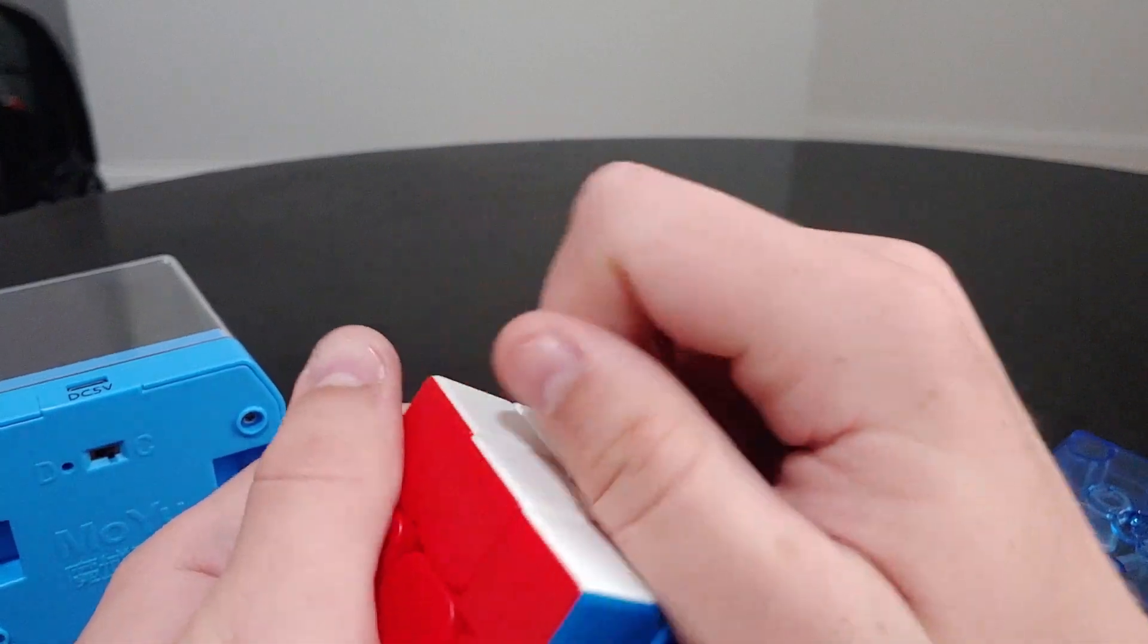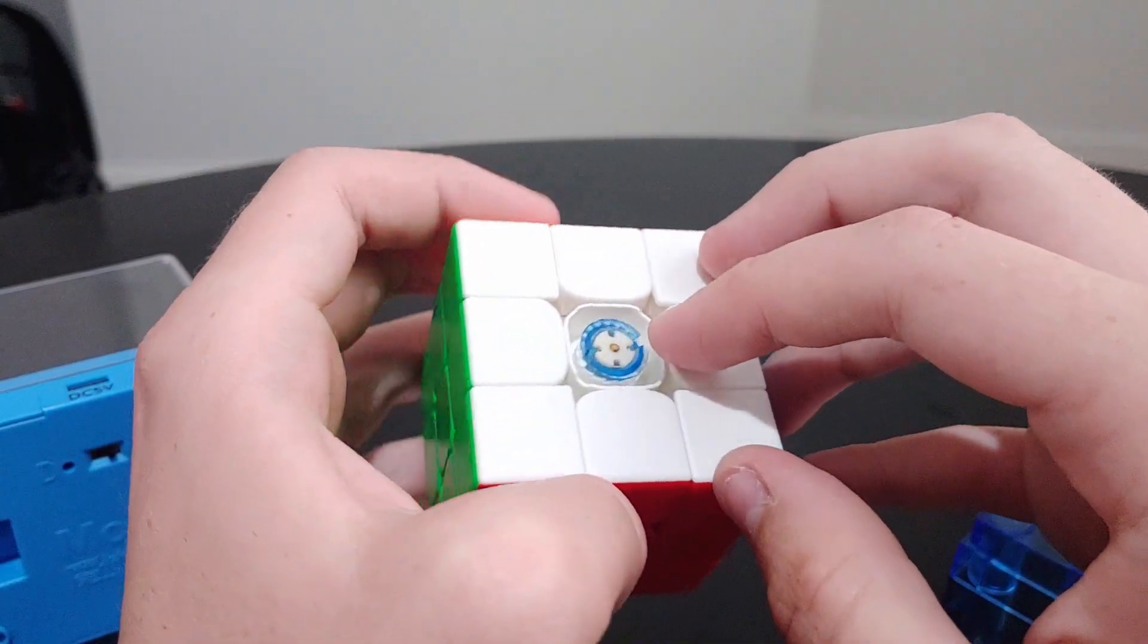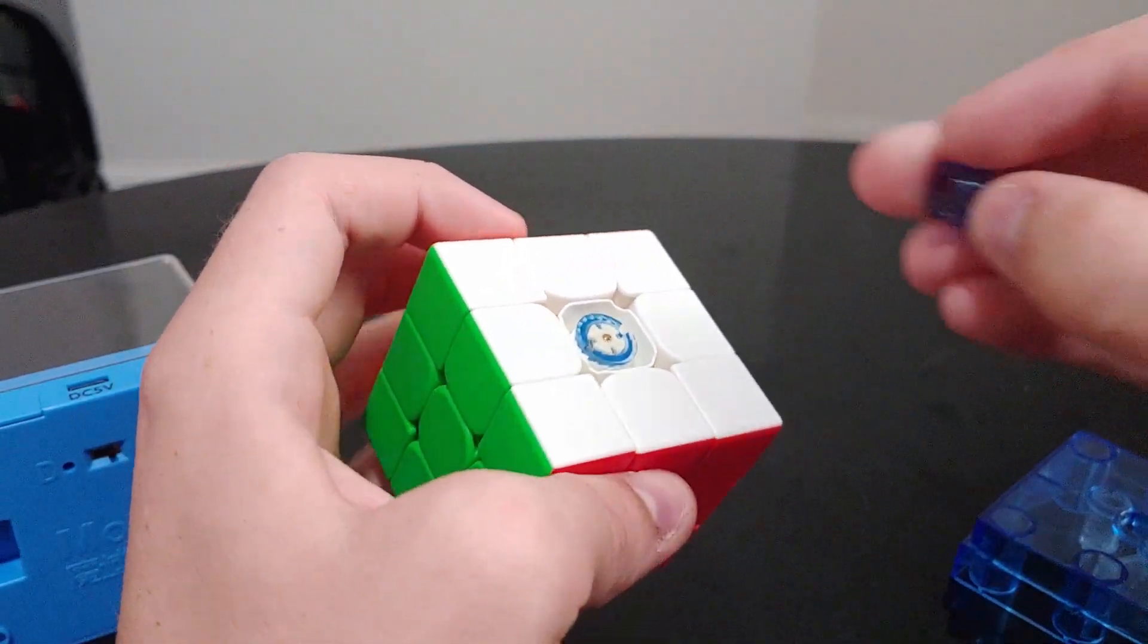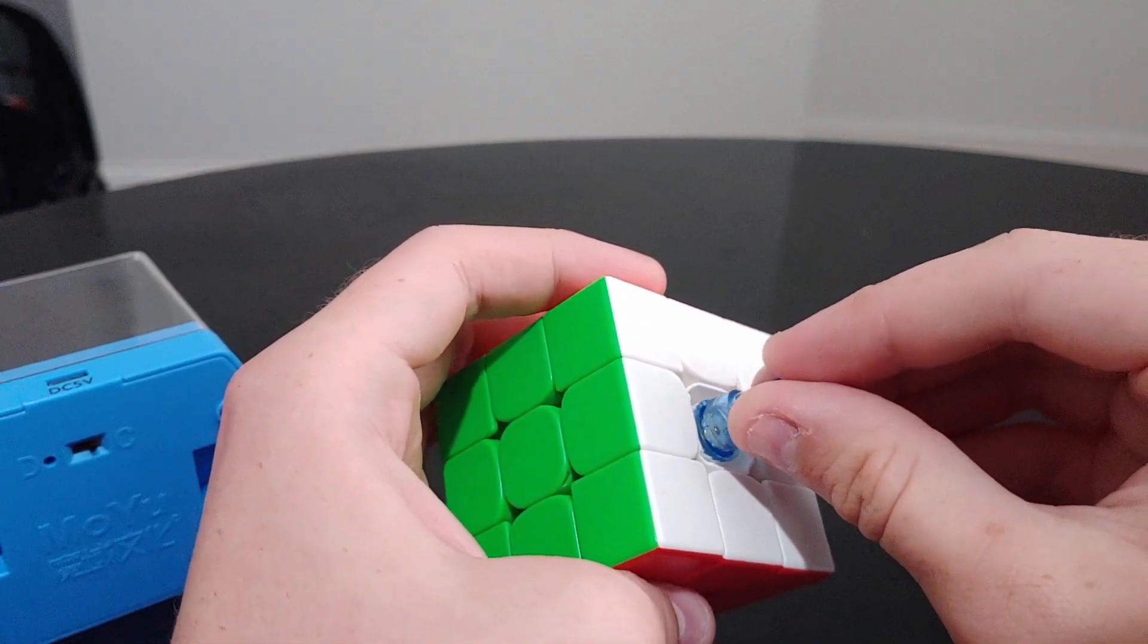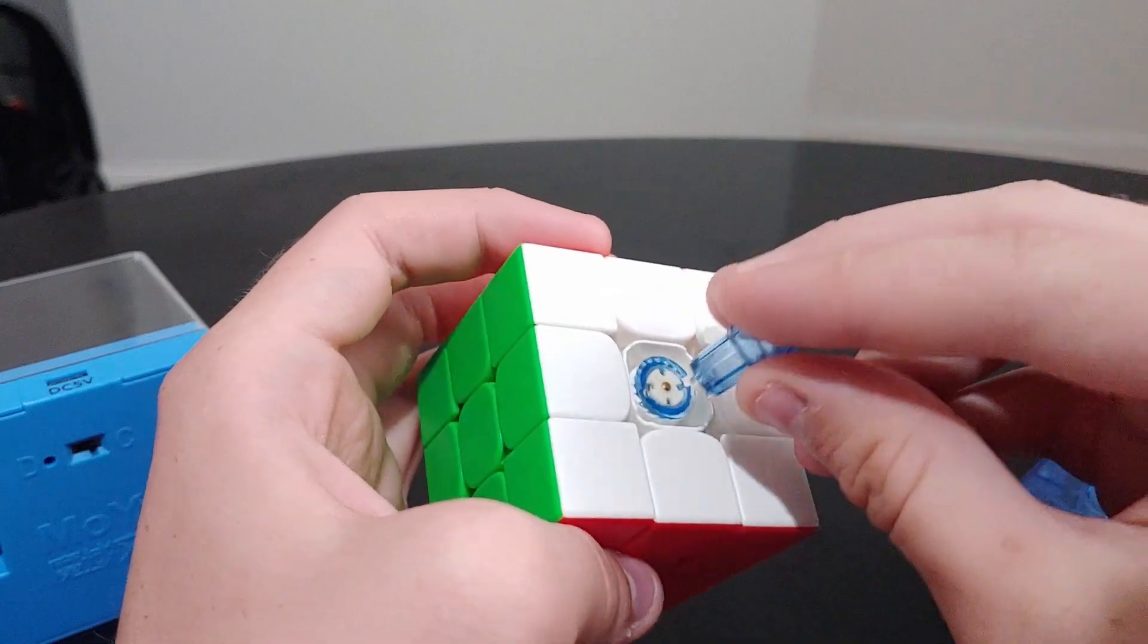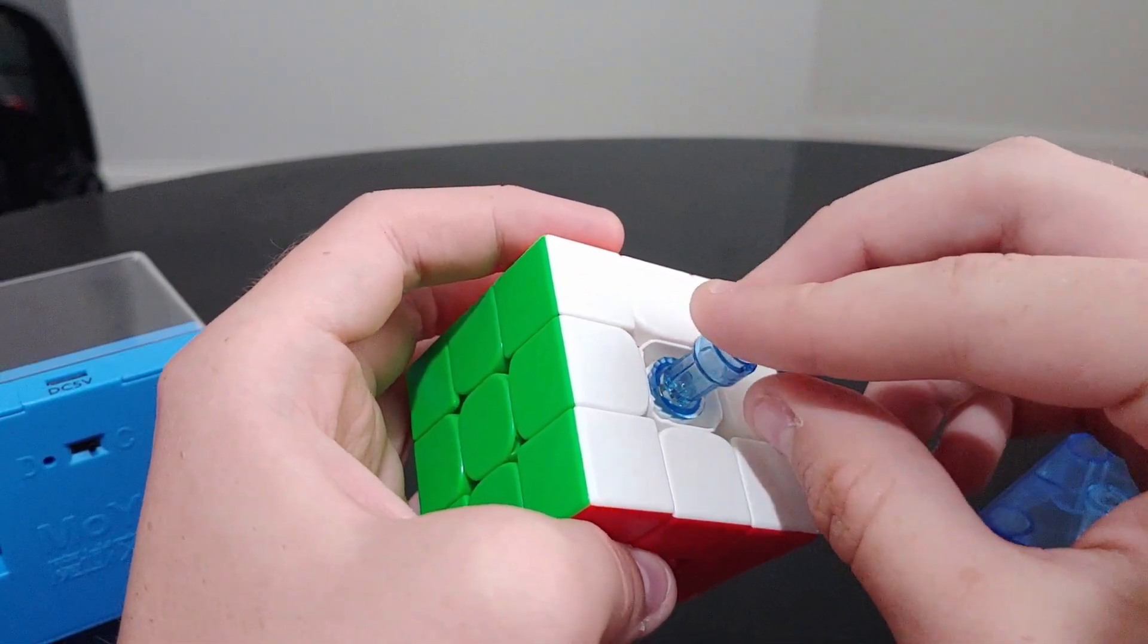Removing a center cap reveals the adjustment system. On the outside, there's the familiar blue dual adjustment system, and the inside has this nut type thing. The outside can be adjusted normally by turning the wider side of the tool counterclockwise, and the inner part can be tensioned with the other side of the tool, using it like a screwdriver.